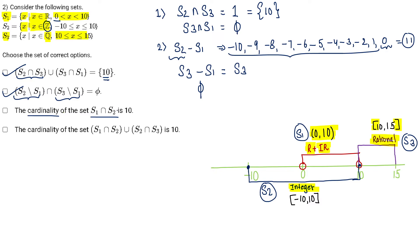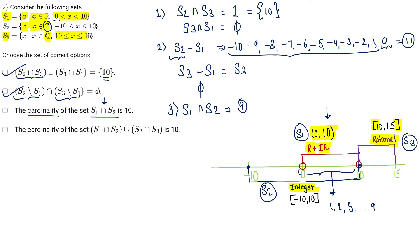Now let's talk about option C. I need to calculate the cardinality of S1 intersection S2. Taking the intersection, I will have only integers because S2 contains only integers, so it will be from 1, 2, 3 till 9. Why 9? Because 10 is not in S1. The cardinality of S1 intersection S2 will be 9, because I have 9 terms: 1 through 9. Cardinality means the number of elements in a set.